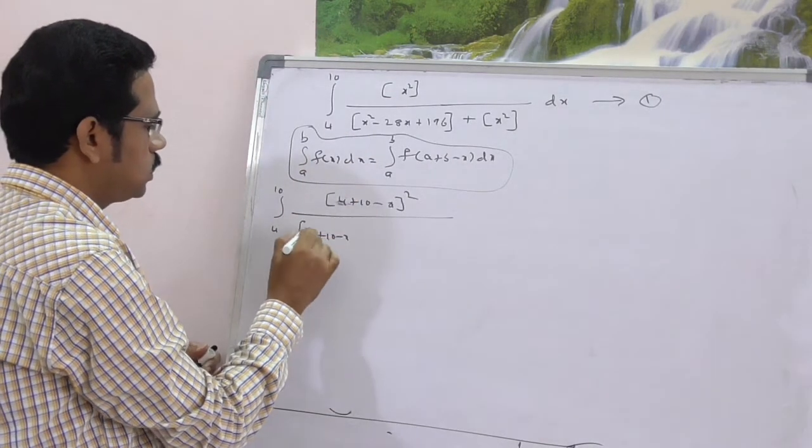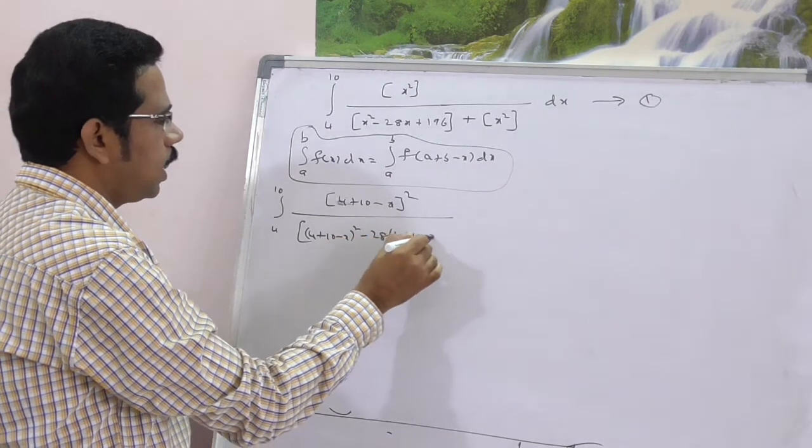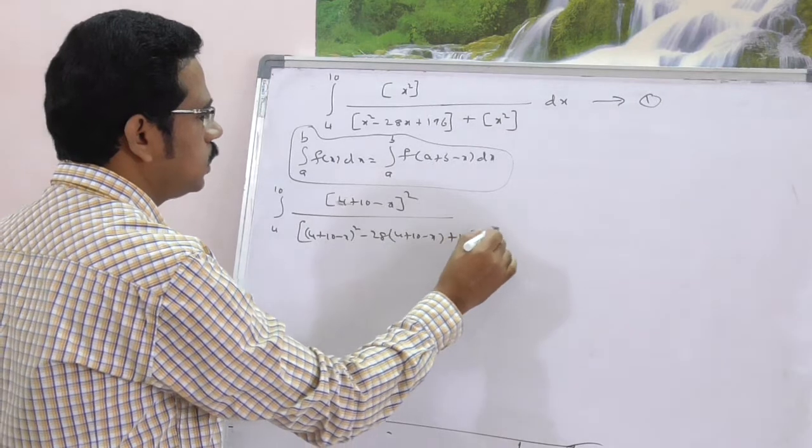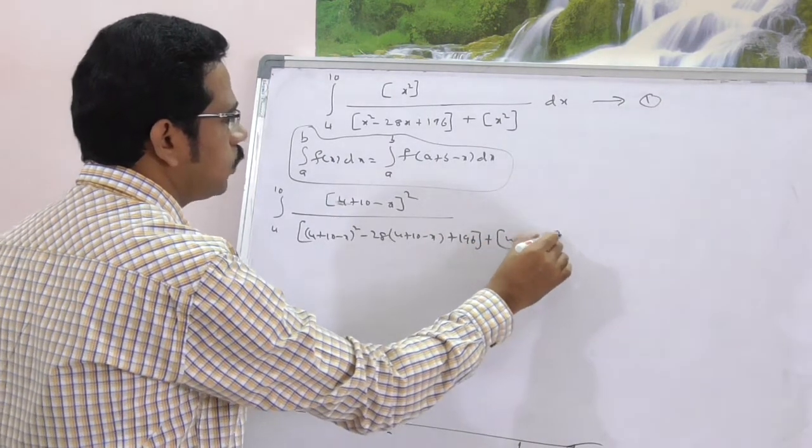4 plus 10 minus x whole square minus 28 of 4 plus 10 minus x plus 196 plus √(4 plus 10 minus x whole square) dx.